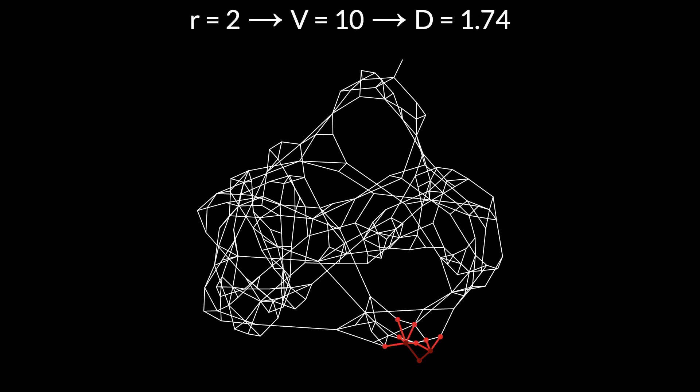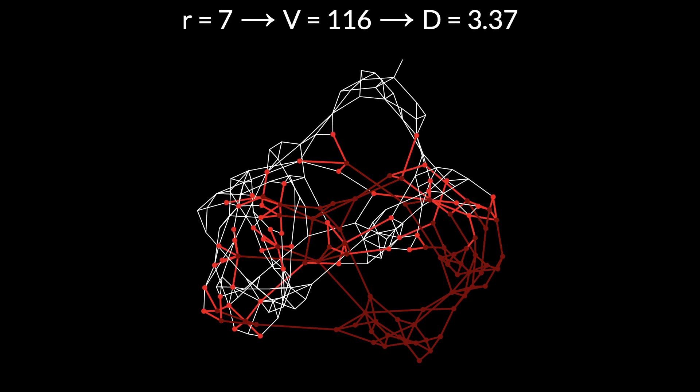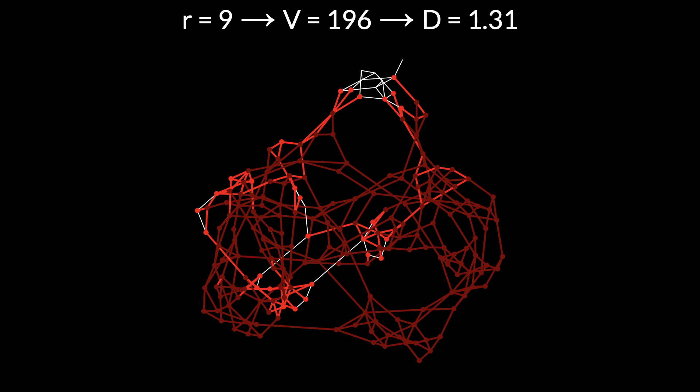After a few steps the number of dimensions goes over 2. r equals 5 gives us v equals 44, d equals 2.03. A couple of steps further it goes over 3 — r equals 7 gives us v equals 116, d equals 3.37. Then we hit the limits of the graph and the number goes back down — r equals 9 gives us v equals 196, d equals 1.31. You can see that it doesn't matter whether the graph has edges like the grids we were looking at earlier or wraps back on itself like this one — either way, when we run out of edges the calculation goes wrong.